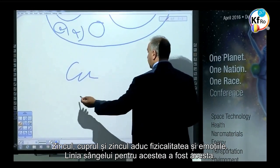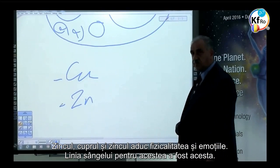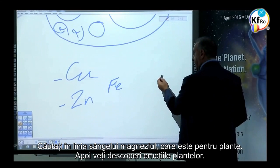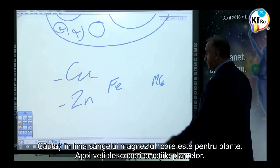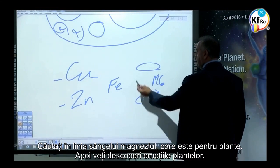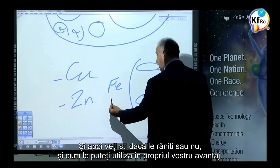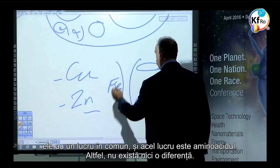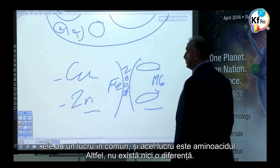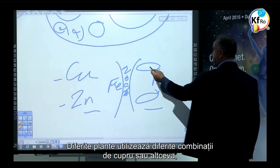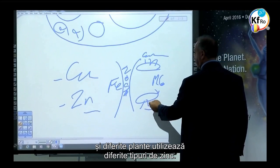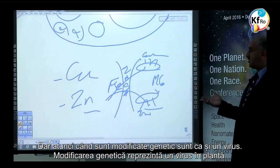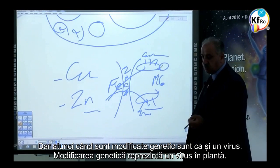Zinc and copper brought physicality and emotion. Look for the bloodline for magnesium, which is for the plants. Then you find the emotion of the plants and know if you hurt them or not. They are all connected — all this structure is connected to one thing: the amino acid. Different plants use different combinations of copper or zinc. You find what relates to man, you can change the emotion of man. When it's genetically modified, it's in excess — it's like a virus. Genetic modification is a virus into the plant.